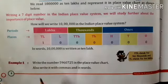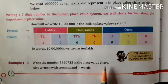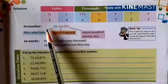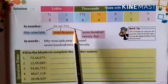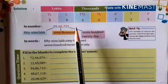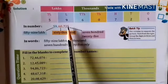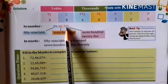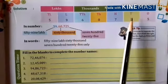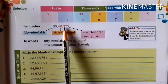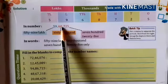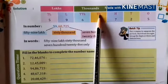Students, look at this example. Write the number 59,60,725 in the place value chart. Also write it with commas and in words. Look at this place value chart — we have to put the digits according to their places. Here 5 is in the ones place, so put 5 in the ones place. Here 2 is in the tens place, so put 2 in the tens place. Here 7 is in the hundreds place, so put 7 in the hundreds place. Here 0 is in the thousands place, so put 0 in the thousands place.